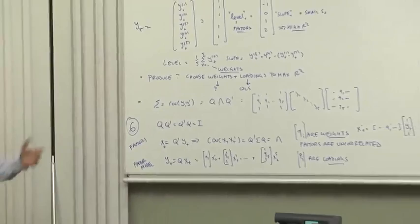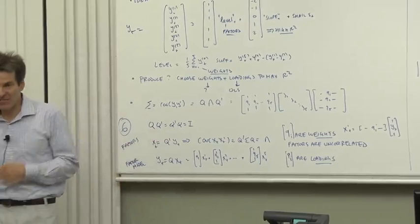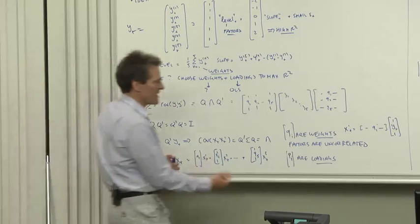Great, you say. So what? I did that in matrix algebra class. Let me show you how useful that is for what we want to do. Suppose you form a vector of factors, x, by q prime y. Now what does that mean? That means, for example, the first x is formed by q prime, the first column of q prime, y.